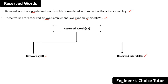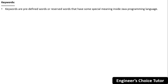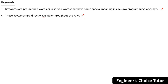Keywords are predefined words or reserved words that have some special meaning inside the Java programming language. These keywords are directly available throughout the JVM, which is the reason we can't use keywords as identifiers. For example, keywords include public, static, void, and class.